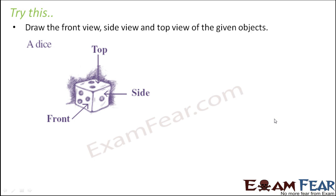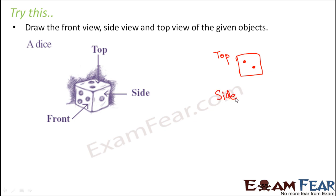You are given a dice. Draw the front view, side view, and top view. Starting with the top view — since this is a cube, you only see the face on top, which has the marking for two. From the side view, you see only the square facing that side. From the front view, you see only the square facing the front. These are the top, side, and front views respectively.